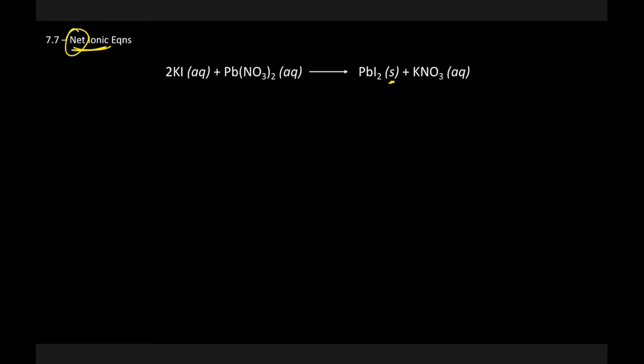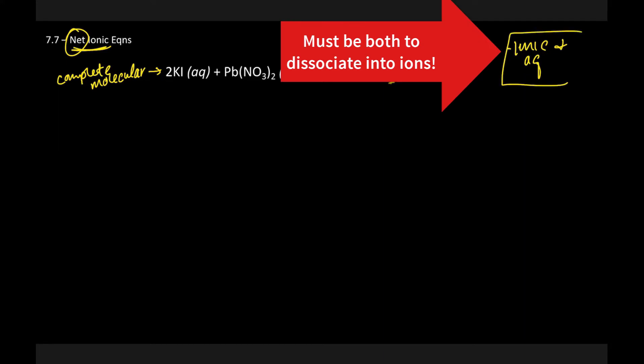This equation here would be called our complete molecular, where it is all of our compounds written out with their complete correct formulas and balanced. Now we are going to go ahead and take a moment and figure out how to write the complete ionic. We're going to have to ask ourselves a couple of questions. Is it ionic? And is it aqueous? If it is ionic and aqueous, that means that we're going to dissociate it.